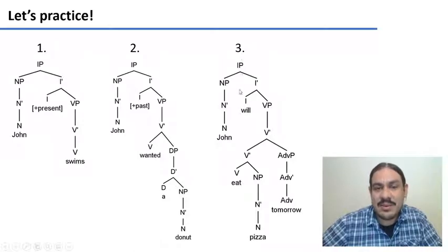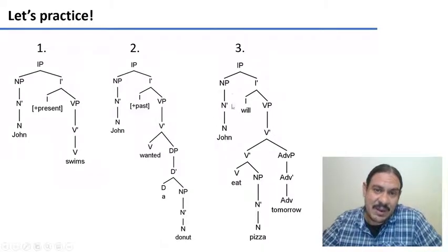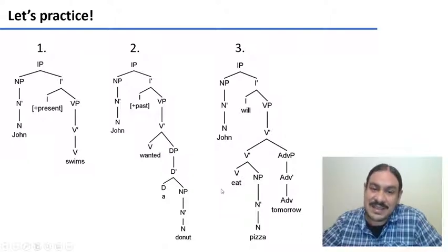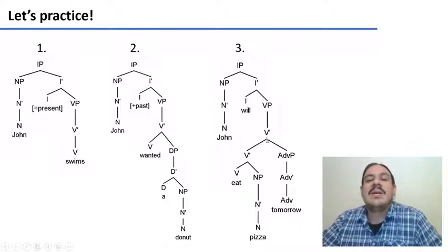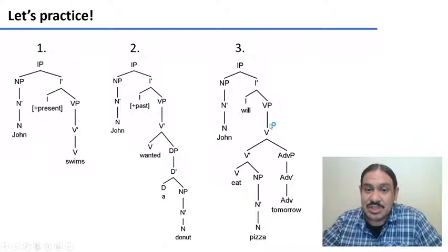Finally, number three: we have a phrase inflected for the future with the head 'will.' Its subject is in the spec position of IP — the noun phrase 'John.' The future inflection 'will' has as its verb 'eat,' so the head of the verbal phrase is 'eat,' and that head is inflected for the future tense. You have two X-bar levels: one for the complement of what you eat — 'pizza' — and one for an adjunct, which is additional information of when you're eating the pizza — 'tomorrow.'